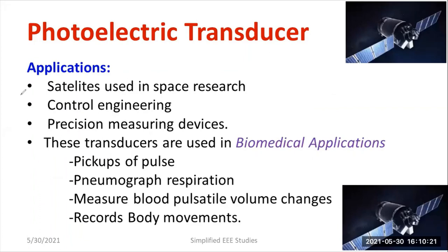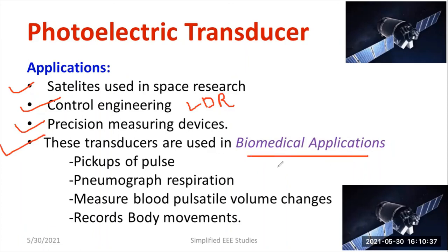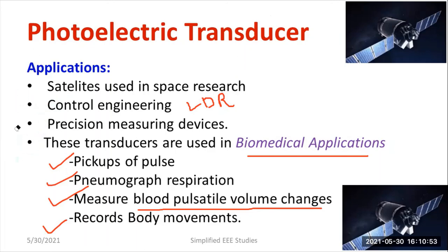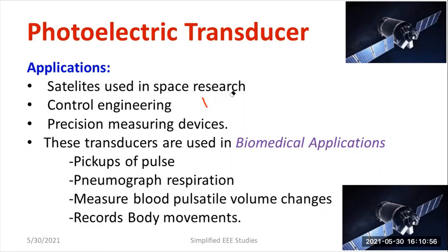Applications of photoelectric transducers: they are used in satellites and space research, in control engineering — especially light-dependent resistors to control street lights automatically. They are used in precision measuring devices and in biomedical applications, including pickups of pulse, pneumograph, respiration, measurement of blood pulsatile volume changes, and recording body movements with devices like photo transistors and photo diodes. There is a huge scope in the area of biomedical engineering.